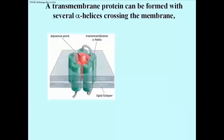A transmembrane protein need not only have a single helix. Here's an example of one with five helices, these cylinders, all traversing the membrane.